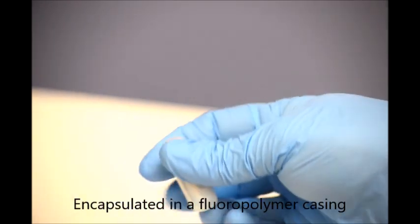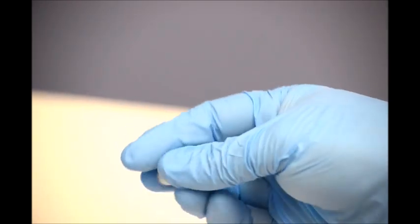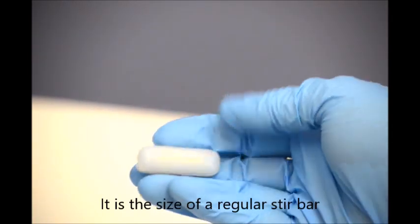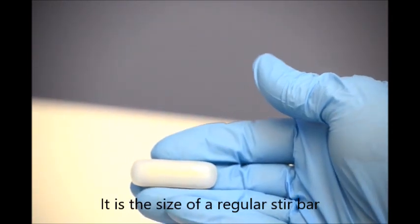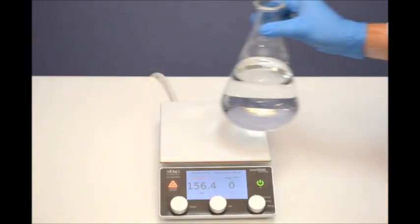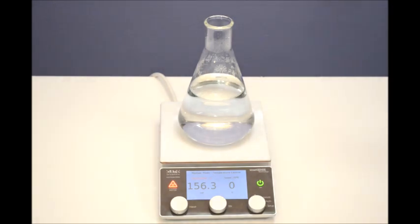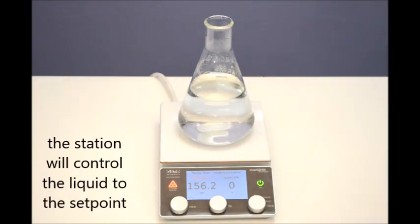The stir bar is encased in fluoropolymer which is inert to most compounds. A container with liquid can be placed on the base station and when the stir bar is immersed into the liquid, it will start transmitting temperature readings of the liquid to the base station.